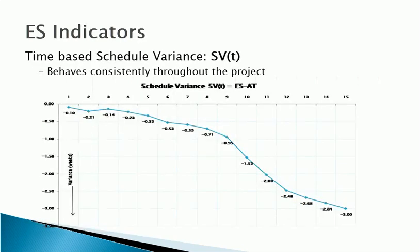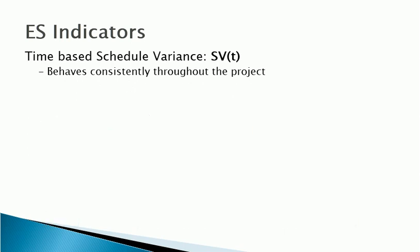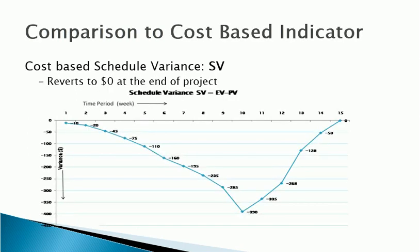Time-based schedule indicators can be computed from Earned Schedule data. These indicators behave appropriately and consistently for all phases of a project, as compared to their cost-based counterparts. As shown here, time-based schedule variance SVT ranges from negative 0.1 week at start to negative 3 weeks at the end of project, indicating the project finished late by 3 weeks. On the other hand, the cost-based schedule variance SV improves to $0 over the last third of the project after being negative for the first two-thirds — which is counterintuitive for a project finishing late.